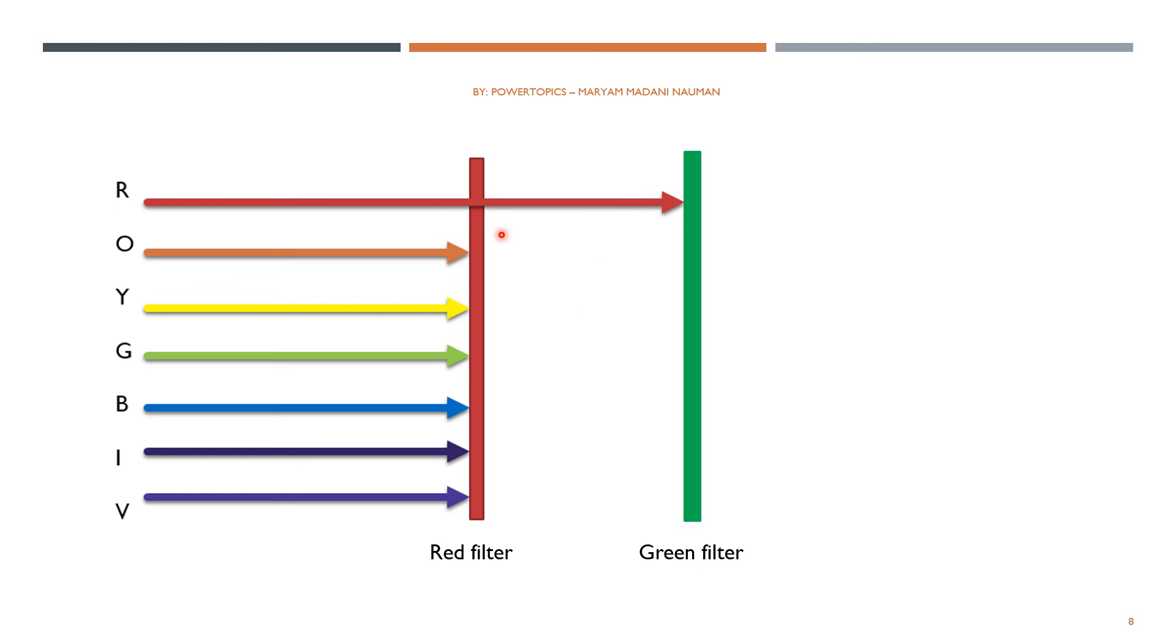If this red light then shines on a green filter, no light will get through. That is because red is one of the colors that a green filter absorbs.